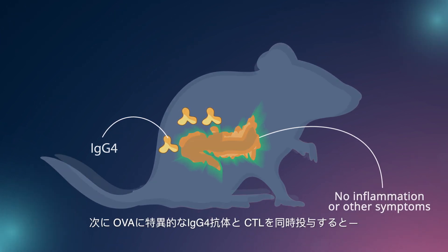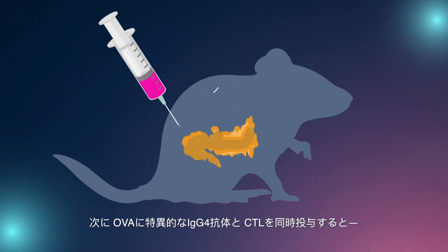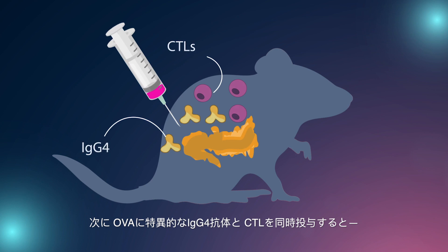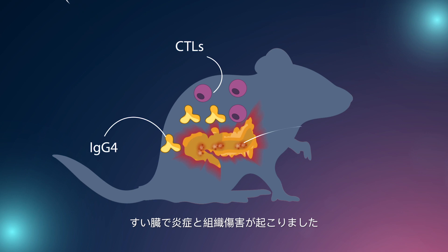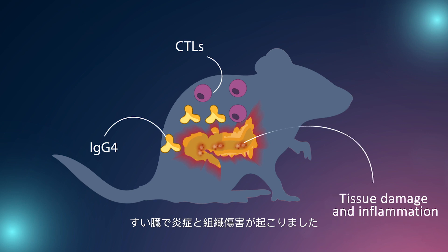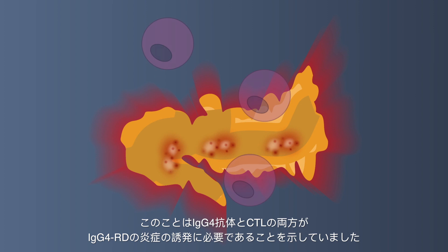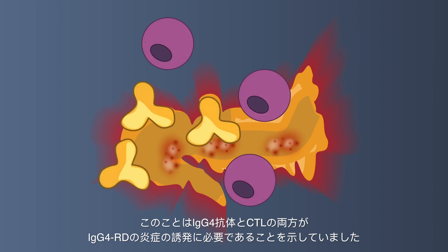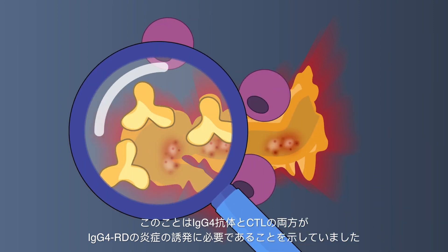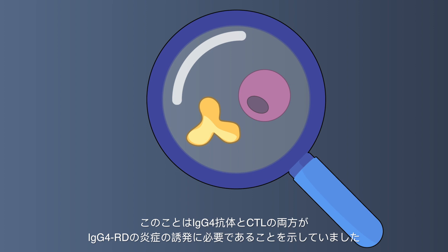Next, they injected both ovalbumin-specific IgG4 as well as CTLs into the mice. Now the pancreas of the mice showed tissue damage and inflammation, indicating that the combination of CTLs and IgG4 was necessary for pancreatic inflammation.